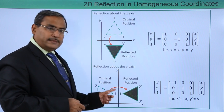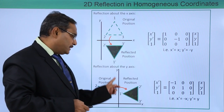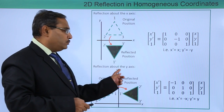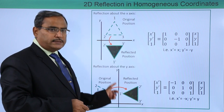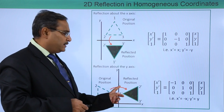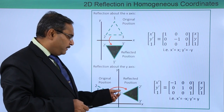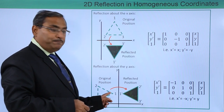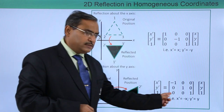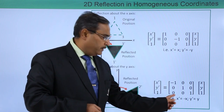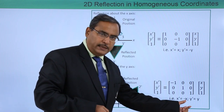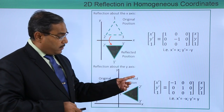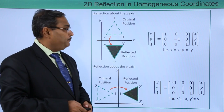Now, if we do the same reflection but along the y-axis, then what will happen? Reflecting about the y-axis, the y values will remain the same, but the x value will be negative in that case. This is the transformation matrix where x' is equal to minus x and y' is equal to y.